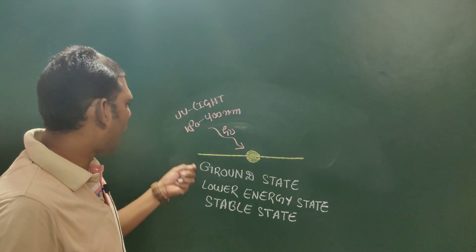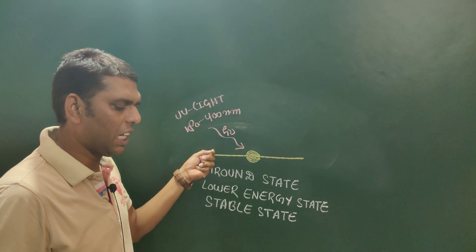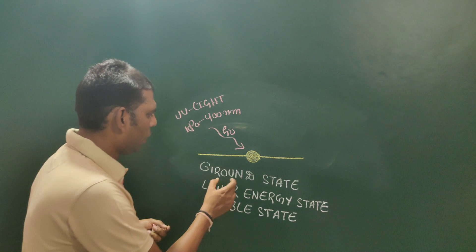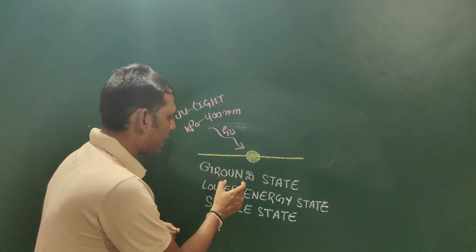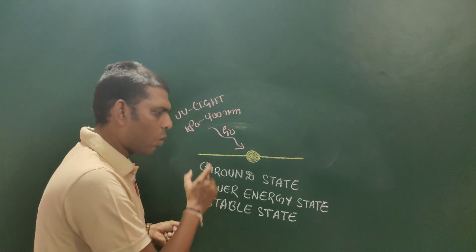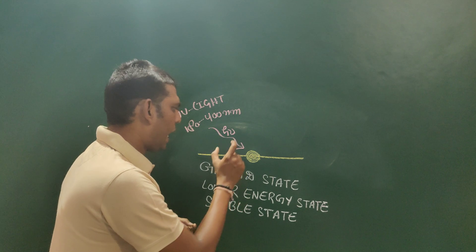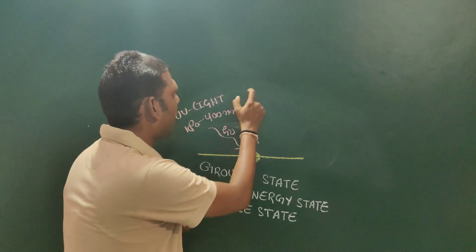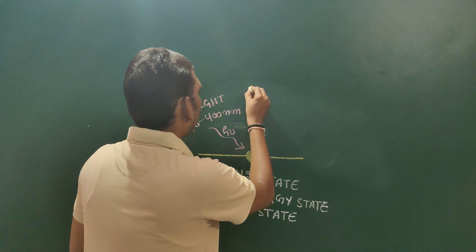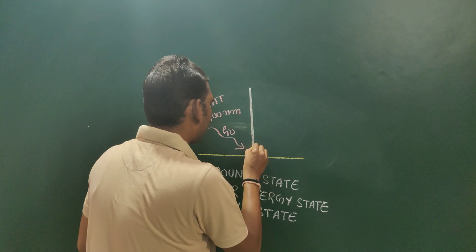After absorbing radiation, the molecule which is present in its ground state is now excited, leaves its ground state, and reaches an excited state.